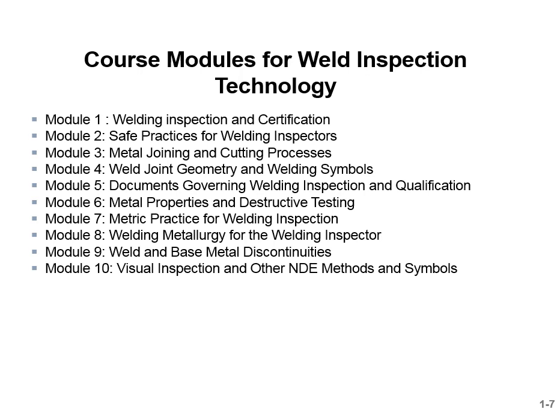This is a list of course modules we're going to cover as we prepare everybody for the certified weld inspection test. Module 1 is Weld Inspection and Certification. Module 2 is Safe Practices for Welding Inspectors. Module 3 is Metal Joining and Cutting Processes. Module 4: Weld Joint Geometry and Weld Symbols. Module 5: Documents Governing Weld Inspection and Qualification. Module 6: Metal Properties and Destructive Testing. Module 7: Metric Practice for Welding Inspection. Module 8: Welding Metallurgy for the Welding Inspector. Module 9: Weld and Base Metal Discontinuities. Module 10: Visual Inspection and Other NDE Methods and Symbols.